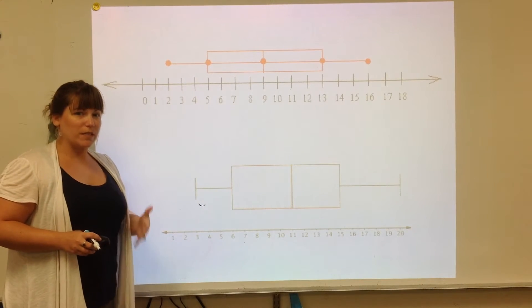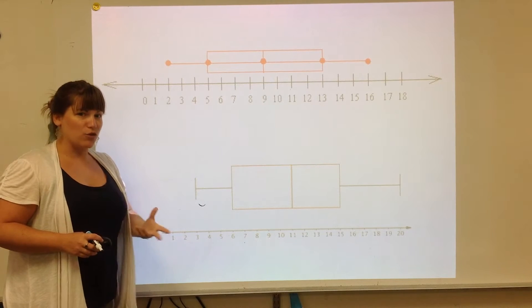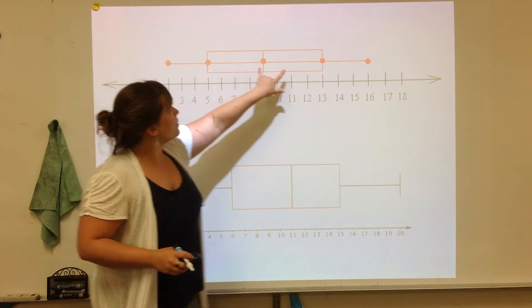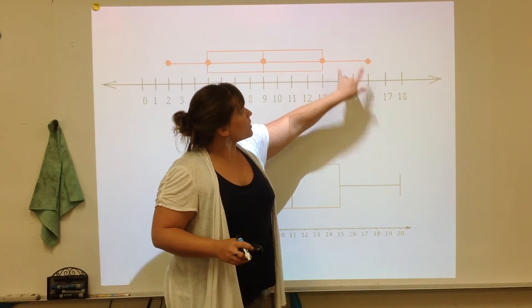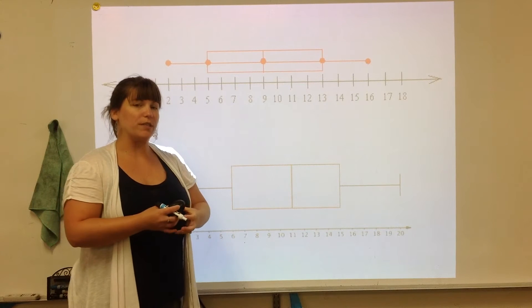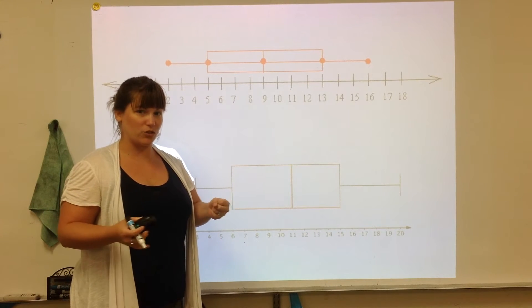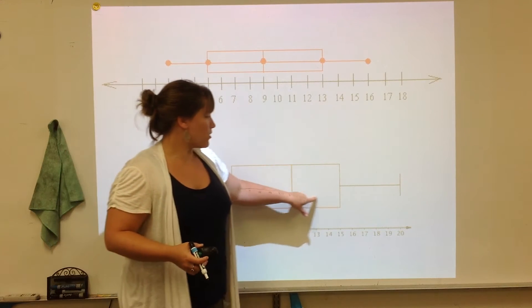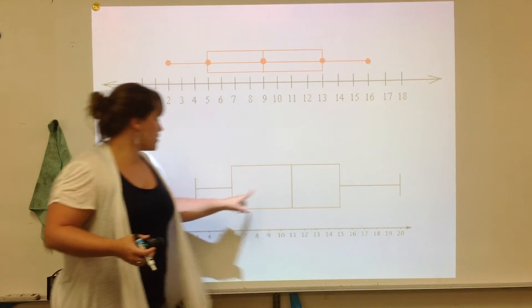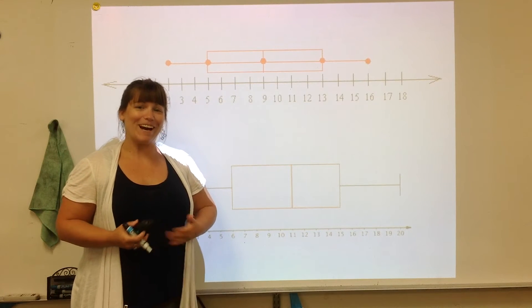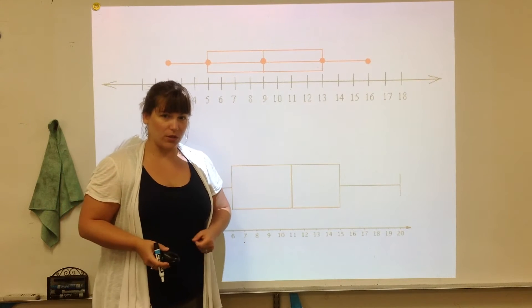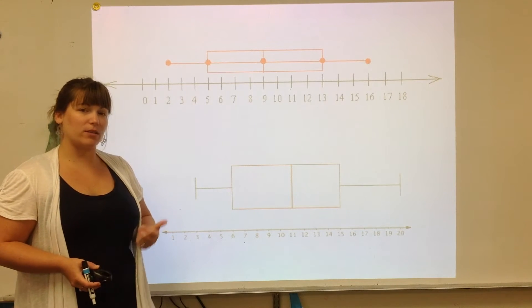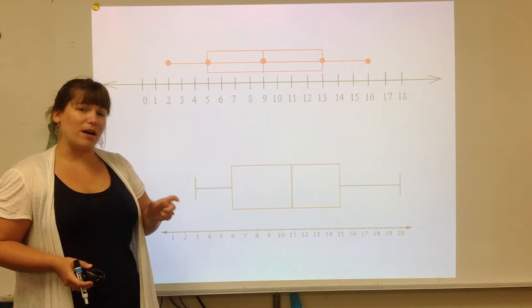So here we have two box plots. And very simply, I'm just going to talk about how you know whether it's symmetrical or not. If the space between the boxes and the whiskers are all the same, you can say that it is symmetrically distributed or evenly distributed. If you see that one box is longer than another, one whisker is longer than another, then it is safe to say that it is not symmetrical. So really quick visual, you can tell whether a box plot is symmetrical or not just by looking at the space and the gap between the boxes and the whiskers.